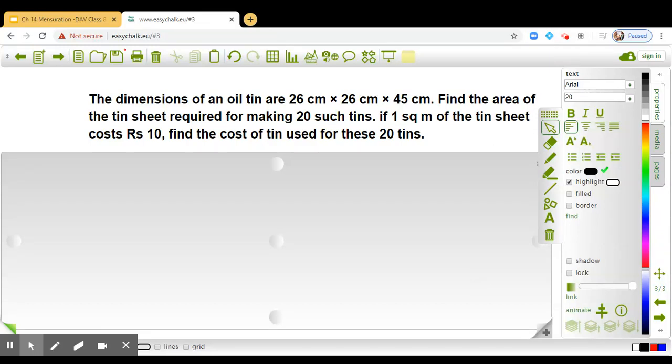Dear students, let us solve another question from the chapter mensuration. The dimensions of an oil tin are 26 cm by 26 cm by 45 cm.